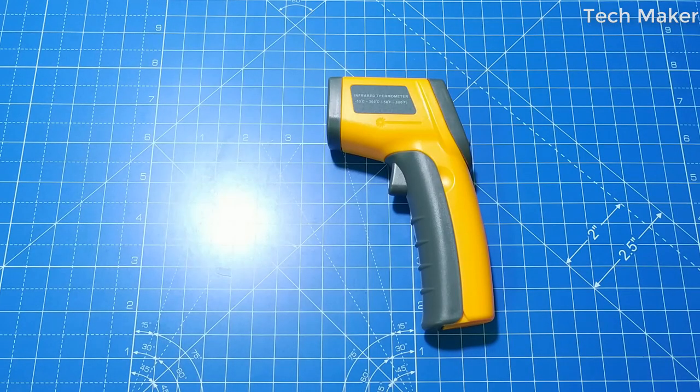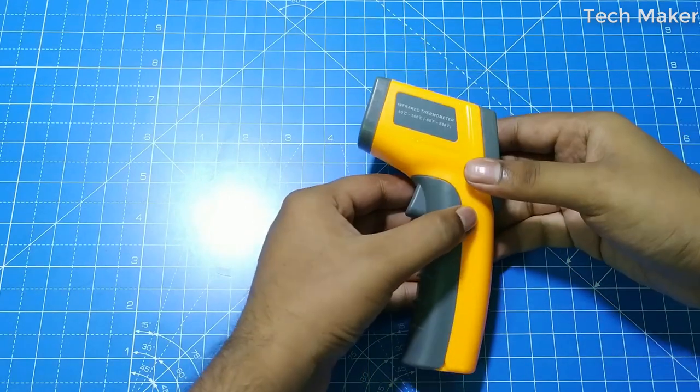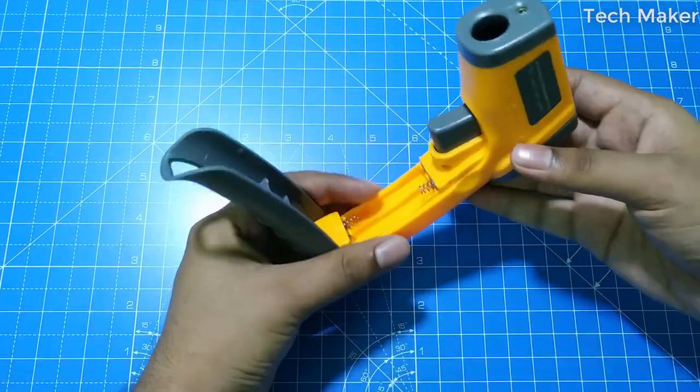Let's insert the batteries into this thermometer and see its features. It works with 2 AAA batteries of 1.5V.